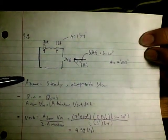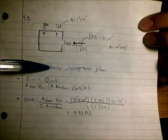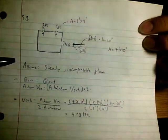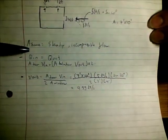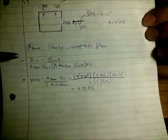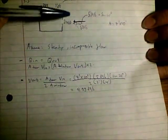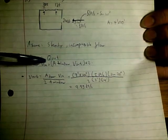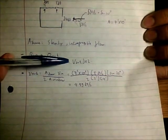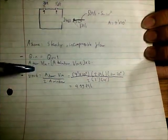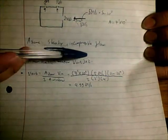First, we assume that the flow is steady and incompressible. The first equation we use is conservation of mass, which is Q in equals Q out. The inlet is the area of the door times V in, and the outlet is the area of the window times the velocity coming out. Since there are two windows, we multiply by two.